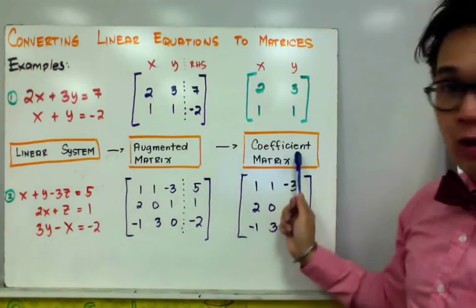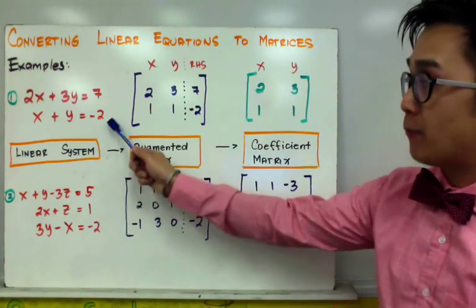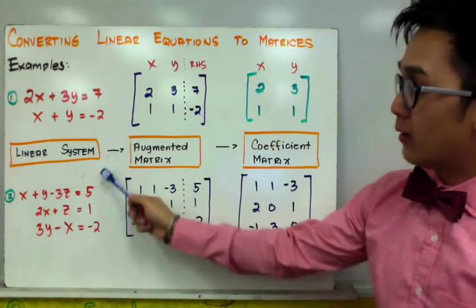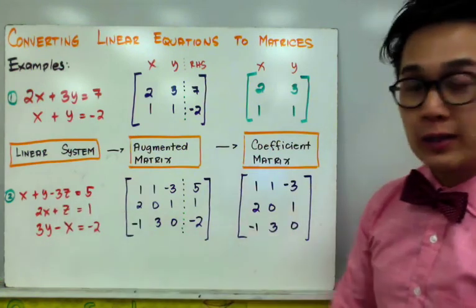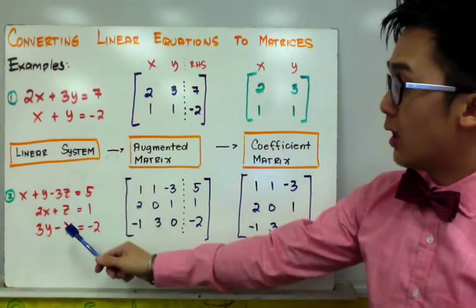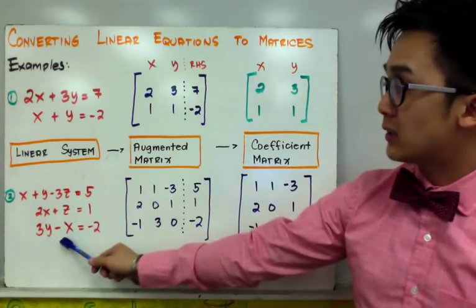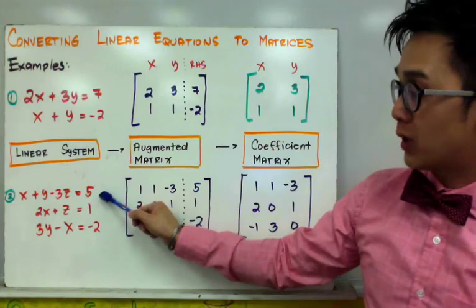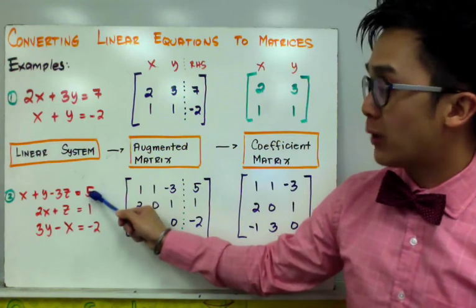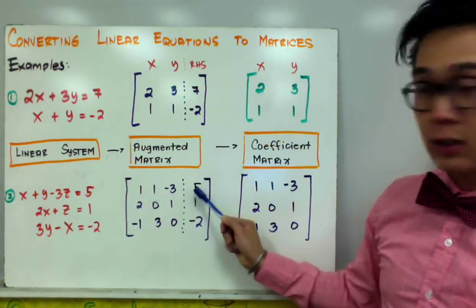For the second example, we have a three-variable system with x, y, and z, which results in a different size matrix. To convert to an augmented matrix, the first equation x plus y minus 3z equals 5 becomes row 1, 1, negative 3, equal to 5. The second equation is missing the y variable, so its row is written as 2, 0, 1, equal to 1, where 0 is the placeholder for the missing y.